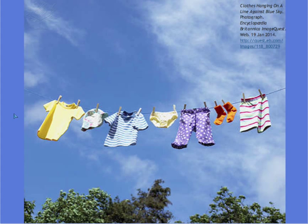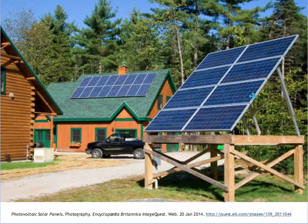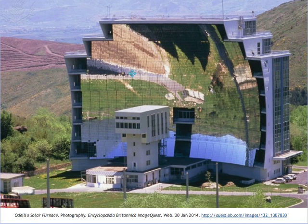One source of energy that we often take for granted is the direct rays of the sun. Solar energy is certainly a renewable source of energy, for once there is life on earth, there will be energy from the sun. This home uses photovoltaic cells to convert light energy directly into electrical energy, whereas here at this solar furnace, the heat of the sun is being channeled to convert water into steam and to generate electricity.